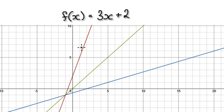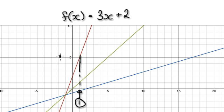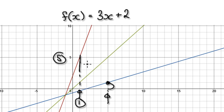Going back to our normal function, if you put in the number 1, it will spit out the number 5. Now the inverse function — if you put in the number 5, it will spit out the number 1. So this point here gets moved to here.